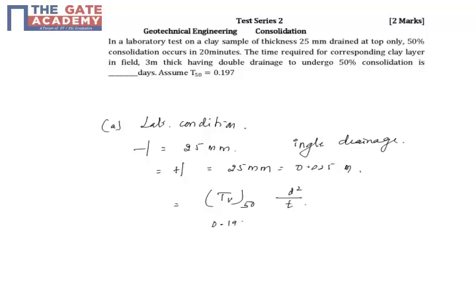90 is 20 minutes which is given in the problem. So if we calculate this finally we will get 6.156 into 10 raise to minus 6 meter square per mm.